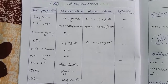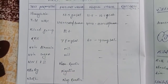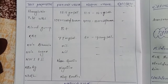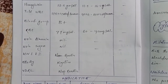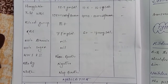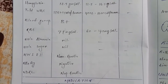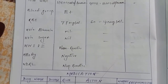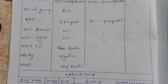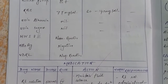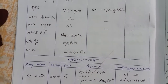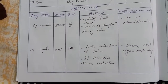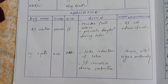Lab investigations: hemoglobin 13.3 g/dL (normal 11.5–16.5 g/dL), total WBC 10,500 cells/cu mm (normal 4,000–11,500), blood group B positive, random blood sugar 77 mg/dL, urine albumin nil, urine sugar nil, HIV 1 and 2 non-reactive, HBsAg negative, VDRL non-reactive.